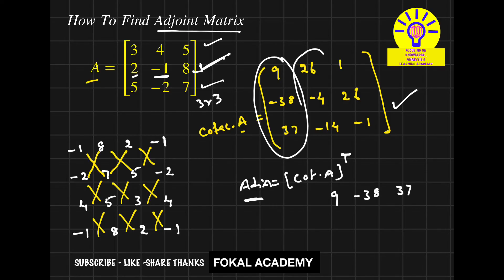Now second column becomes the second row: 26, minus 4, minus 14. Third column becomes third row: 1, 26, minus 11. And this matrix is called the adjoint matrix of the given matrix A.